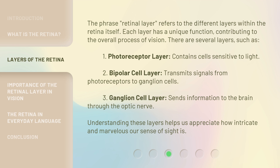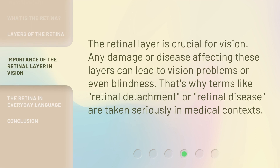Understanding these layers helps us appreciate how intricate and marvelous our sense of sight is. The retinal layer is crucial for vision. Any damage or disease affecting these layers can lead to vision problems or even blindness. That's why terms like retinal detachment or retinal disease are taken seriously in medical contexts.